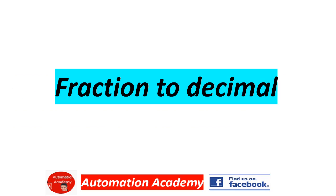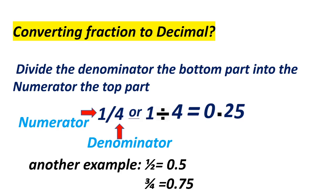Our next topic is Fraction to Decimal. Converting a fraction to decimal: divide the denominator, the bottom part, into the numerator, the top part. For example, 1/4 — 1 is the numerator, 4 is the denominator — is the same as 1 divided by 4, which equals 0.25.